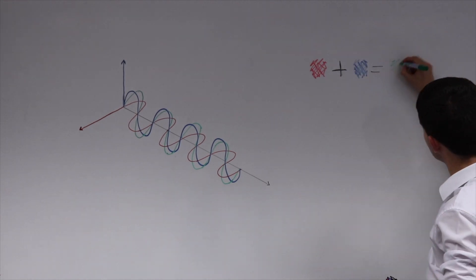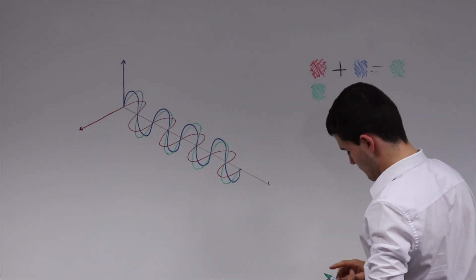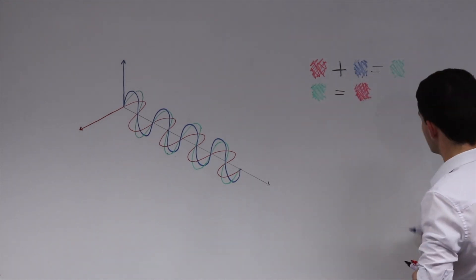Two waves can superpose to form one wave, but one wave can also be described as the superposition of two separate waves.